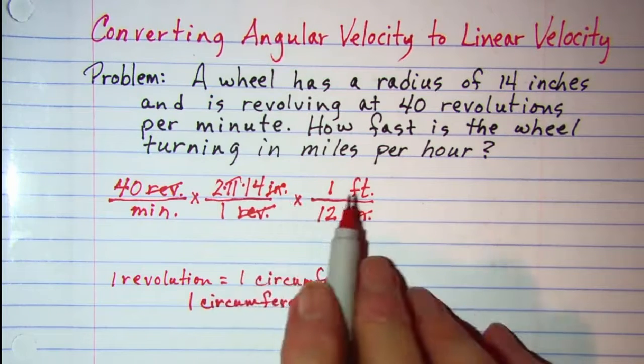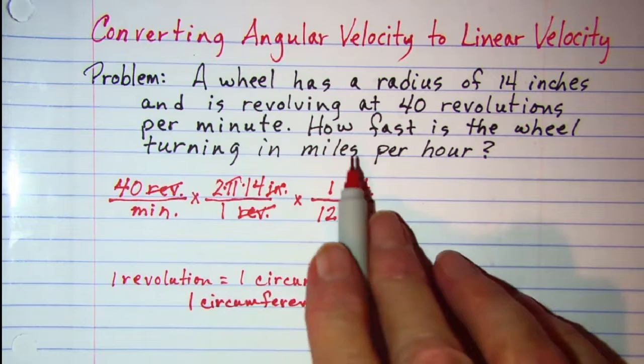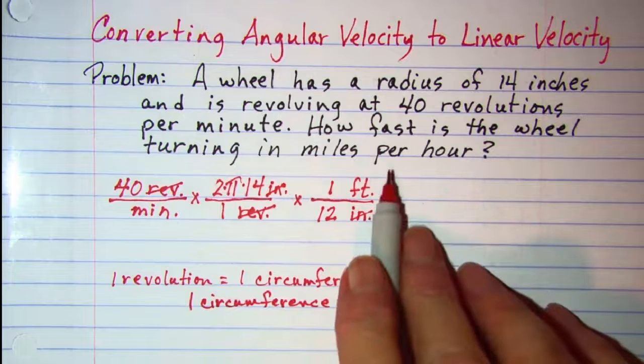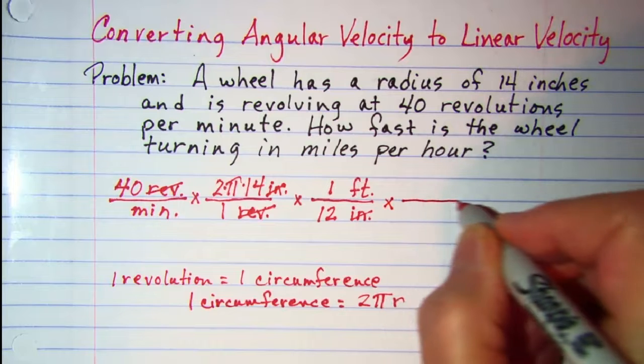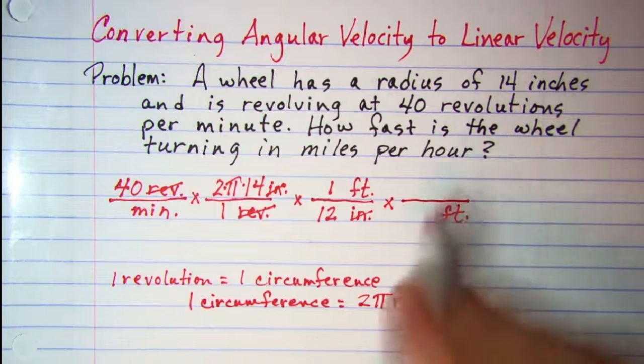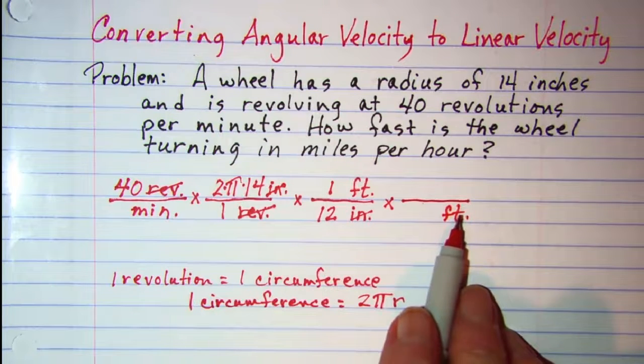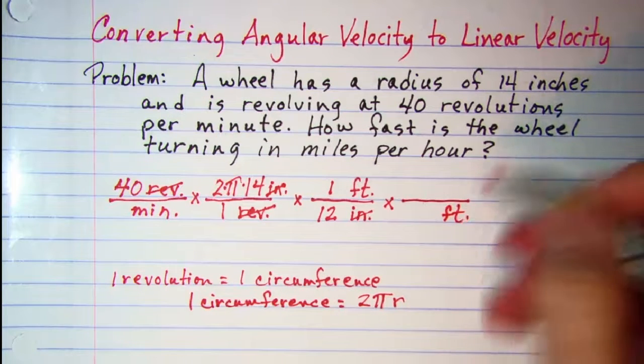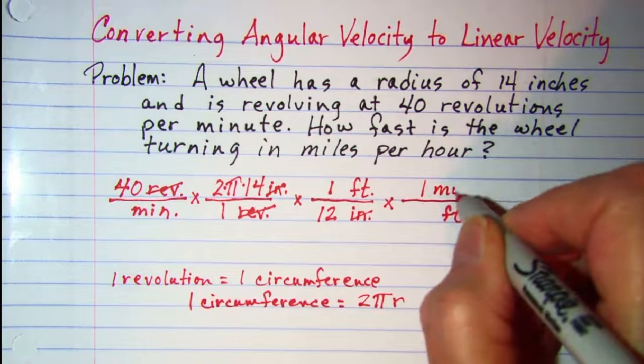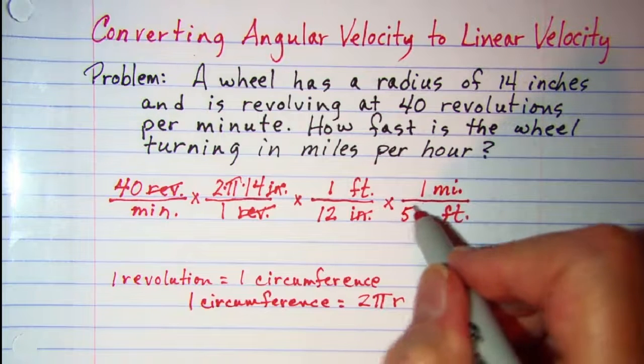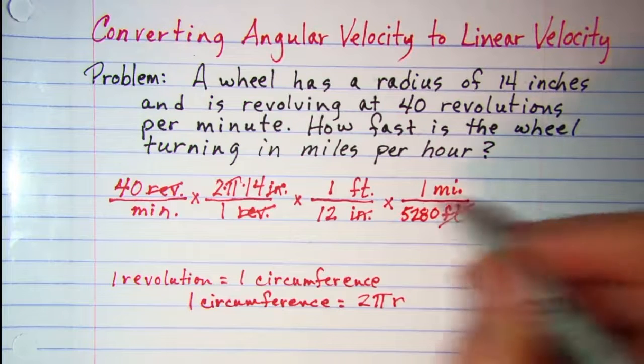So now my problem is in feet per minute but I want miles per hour so let's go ahead and get rid of our feet here. I have feet in the denominator in order to cancel those off and I know that one mile is 5280 feet so that's the unit multiplier that I'll use. One mile, 5280 feet and my feet cancel.